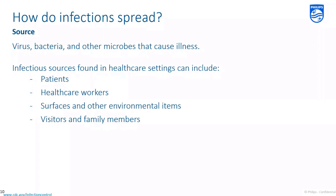Infectious sources found in healthcare settings can include patients, healthcare workers, surfaces and other environmental items, visitors, and even family members. People can carry an infectious agent without showing any signs or symptoms of illness. Common environmental items that can harbor infectious agents include dry surfaces such as countertops, bed rails, and medical equipment; wet surfaces and moist environments such as sinks and faucets and medical ventilators; indwelling medical devices including catheters and IV lines; and construction dust and other debris.